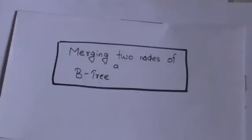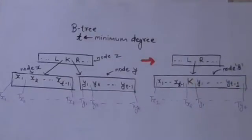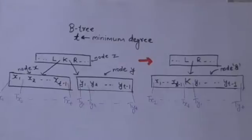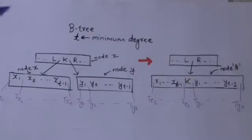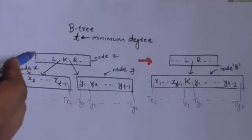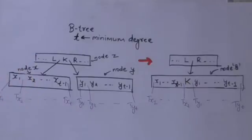Hello friends, welcome back. In this tutorial we will learn how we can merge two nodes of a B-tree. Suppose there is a B-tree of minimum degree t, and there is a node z in this B-tree which has more than t minus 1 number of keys. Since node z has more than t minus 1 keys, if we remove any key from it then it will not violate any property of the B-tree.